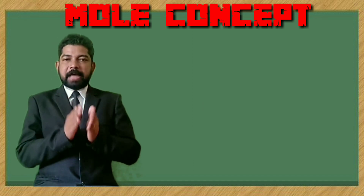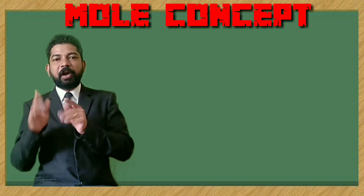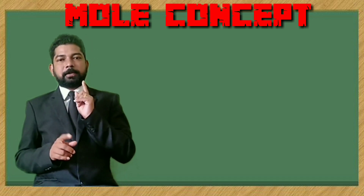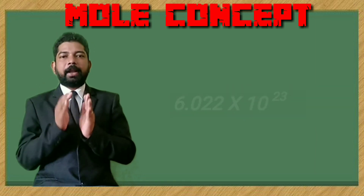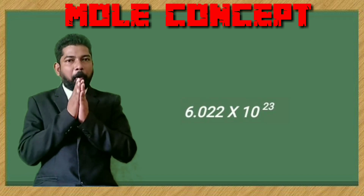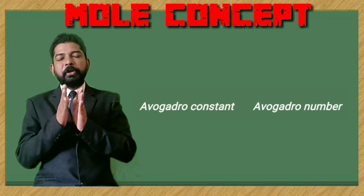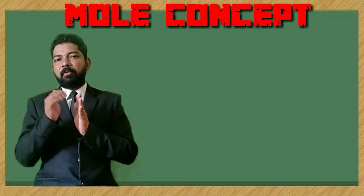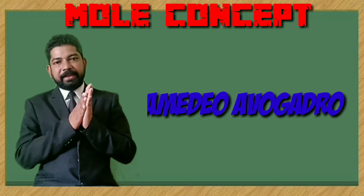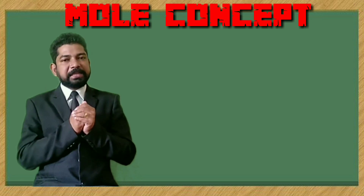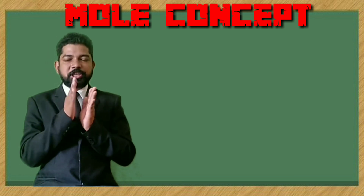The number of particles — atoms, molecules, or ions — present in one mole of a substance is fixed. Whatever the substance, if you have taken one mole, it contains a definite number of particles: 6.022 × 10²³. That number is constant and is known as Avogadro's constant or Avogadro's number, named in honor of Amedeo Avogadro, an Italian scientist.